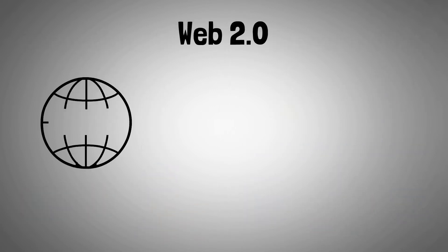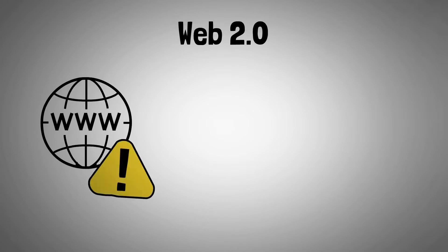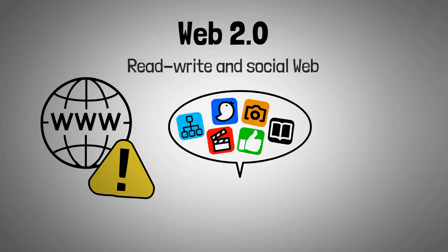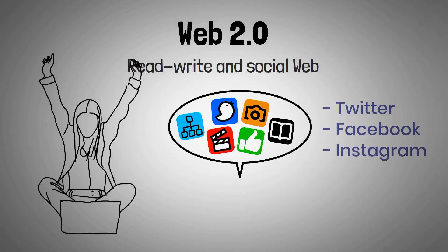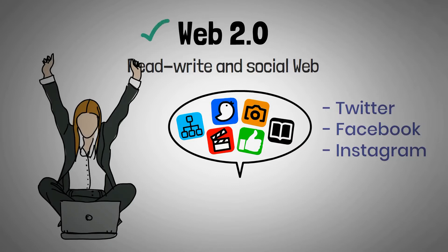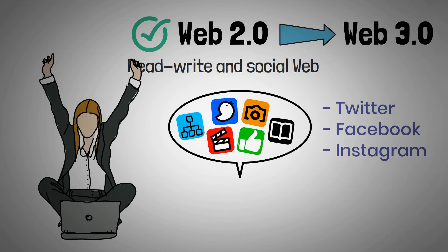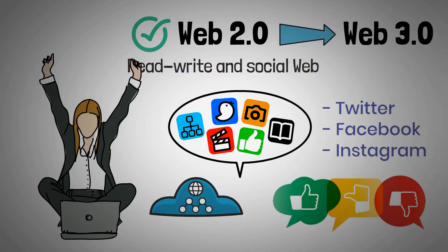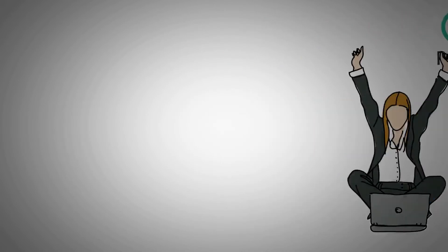Web 2.0 arose as a result of Web 1.0's limitation on communication between content creators and users. Also referred to as the read, write, and social web, it began with the introduction of social media networking websites such as Twitter, Facebook, and Instagram, but has since grown to provide users with a much richer experience. The internet is currently in the Web 2.0 phase and is gradually transitioning to Web 3.0. Users can provide feedback to content producers and create their own content on Web 2.0 websites.